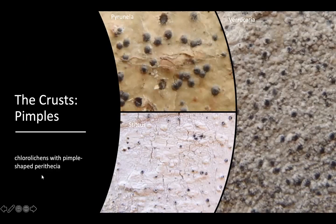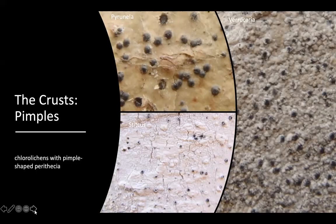The pimples category consists of chlorolichens — lichens that have a green algal photobiont partner — with pimple-shaped perithecia. This introduces the idea of perithecia, which you learned about in Fall Quarter when we covered lichen reproduction; this is just one form of sexual reproduction structures that lichens can have.